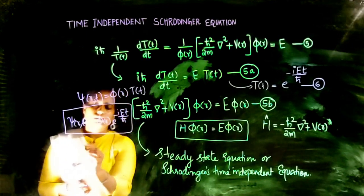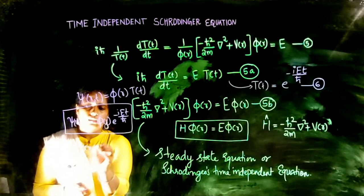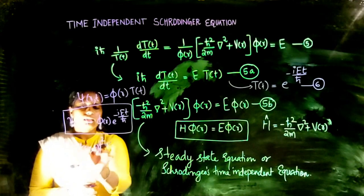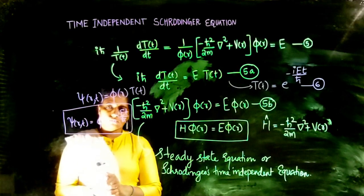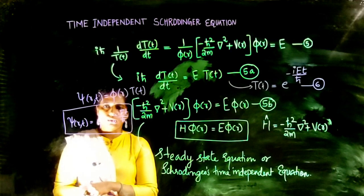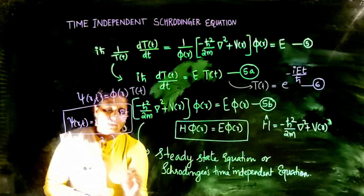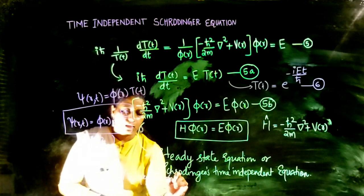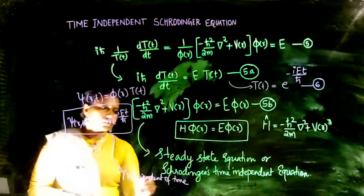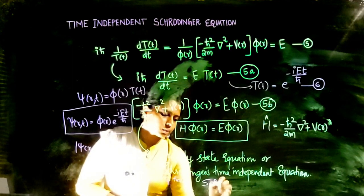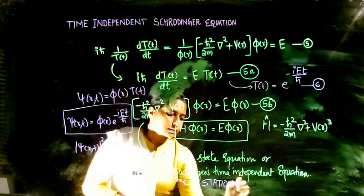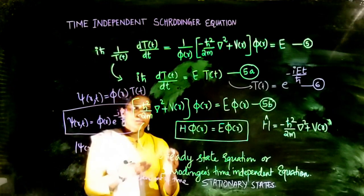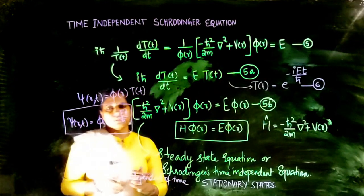If we take |ψ|², the probability density, we find it is independent of time. When you compute the probability density from this solution, the time-dependent exponential factor cancels, making the probability density time-independent. States for which the probability density is independent of time are called stationary states. The complete solution to the Schrödinger equation is given by φ(r) · e^(−iEt/ħ), representing a stationary state.